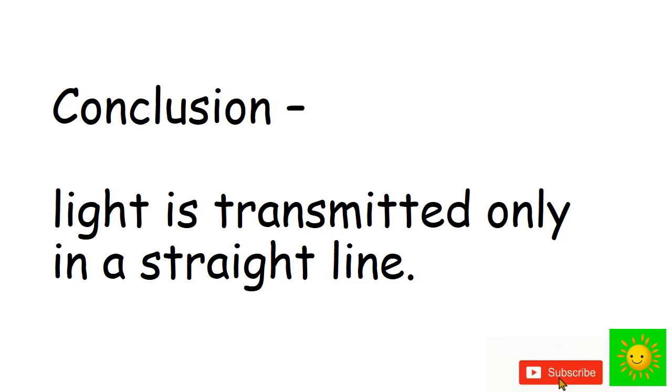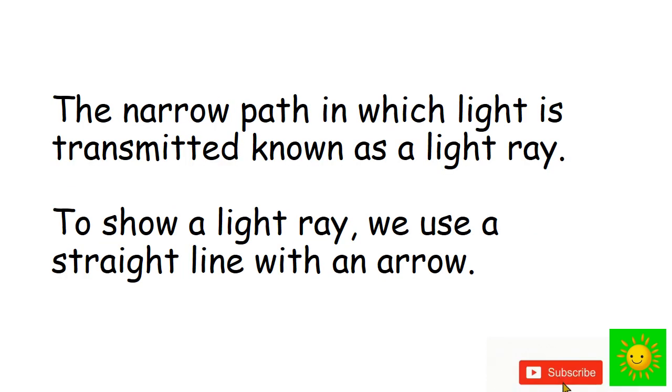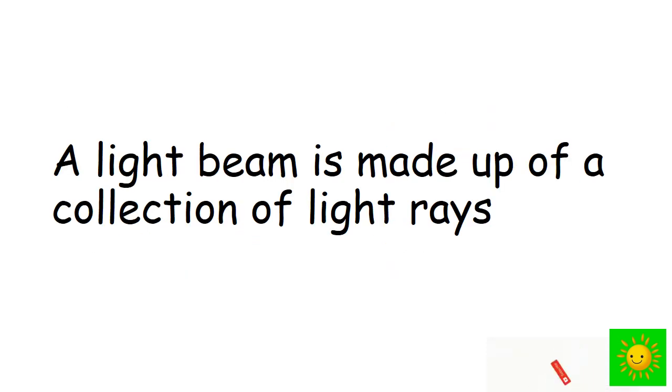In this activity, the straight string which was put through the holes shows the path of the light ray. A narrow path in which light is transmitted is known as a light ray. To show a light ray we use a straight line with an arrow. A light beam is made up of a collection of light rays.